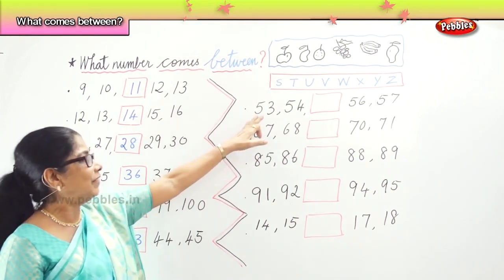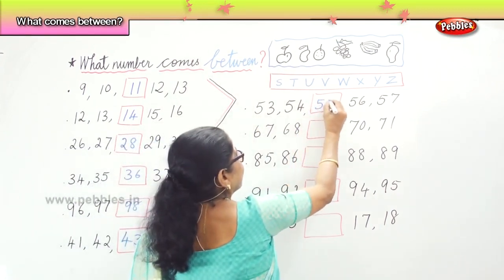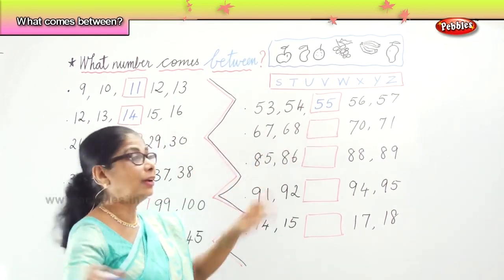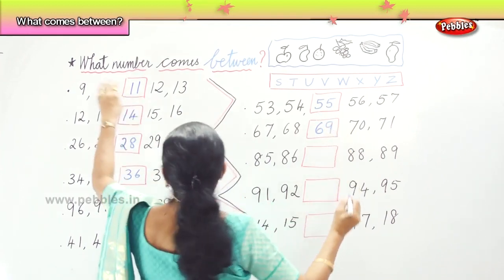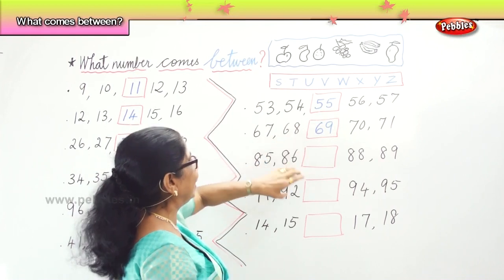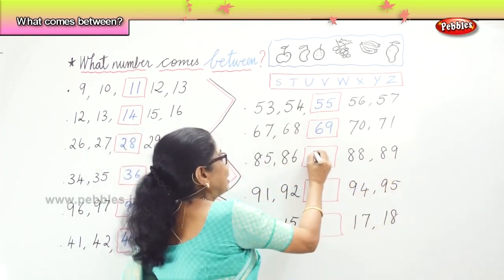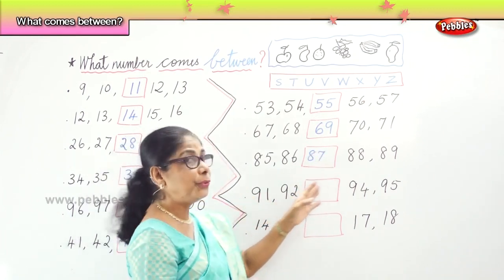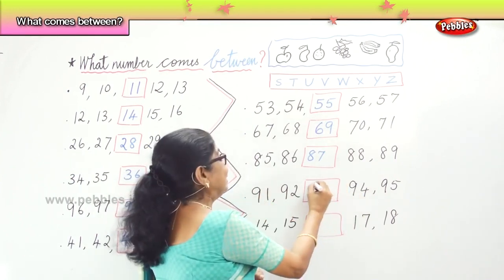Next: 53, 54, __, 56, 57. Good — 55! Then: 67, 68, __, — good — 69! Next: 85, 86, __, 88, 89 — the answer is 87. Very good! Number between: 91, 92, __, 94, 95 — the answer is 93. Very good!